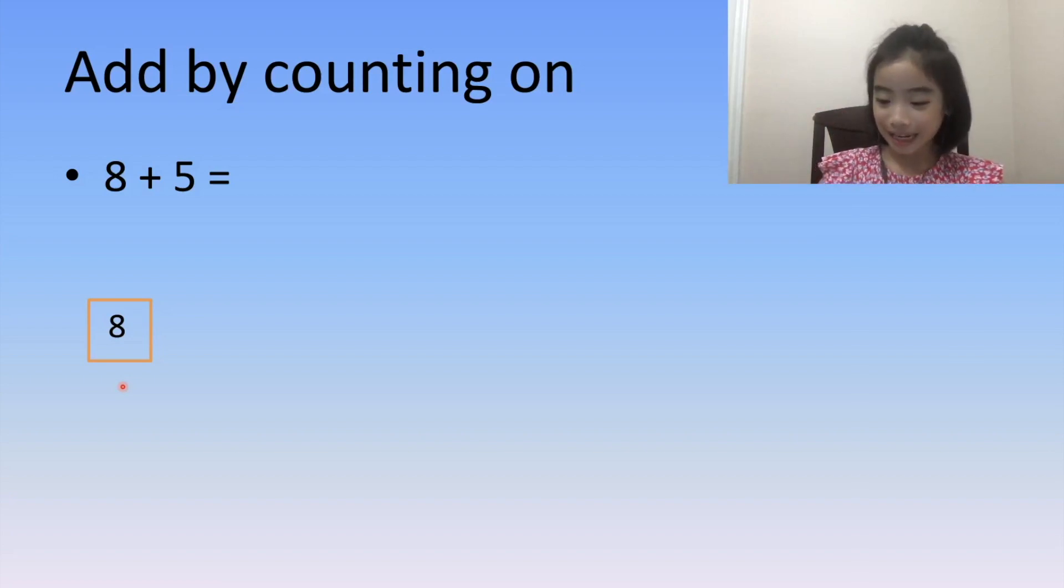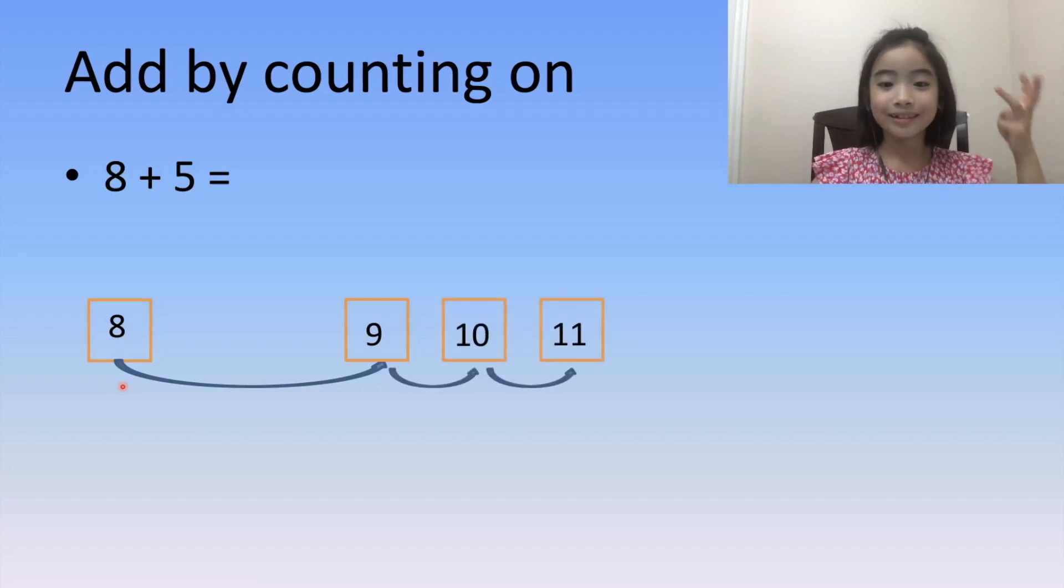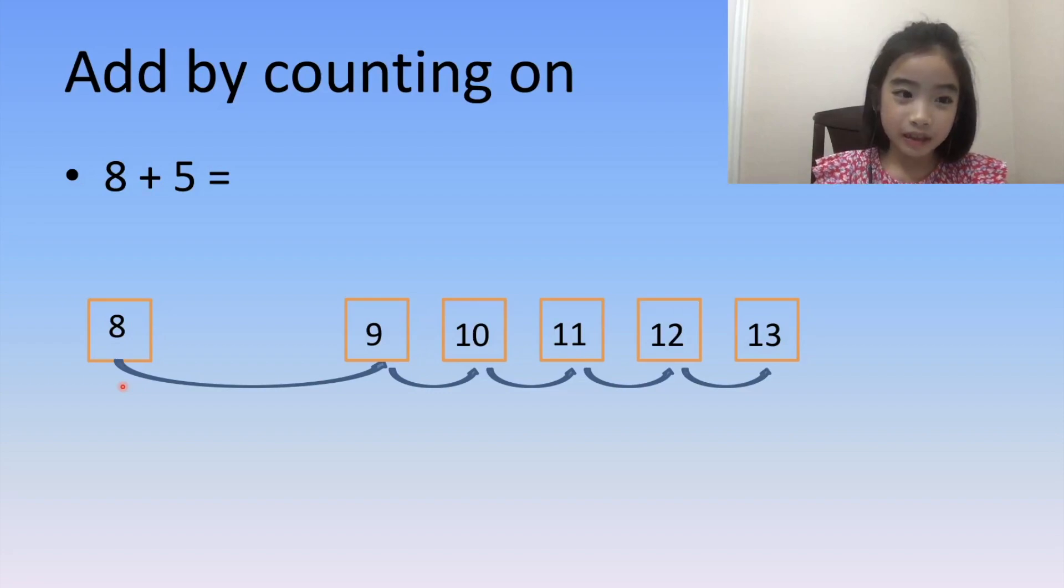So we start from 8 and then 9, 10, 11, 12, 13. So 8 plus 5 is equal to 8, count 5 more. So 8 plus 5 equals 13.